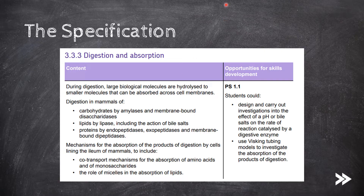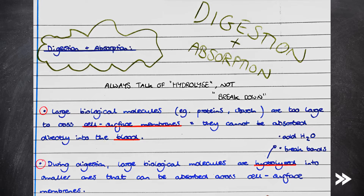Biological molecules such as proteins and starch are too large to cross cell surface membranes, therefore they cannot be absorbed directly into the blood. During digestion, these large biological molecules are hydrolyzed into smaller products that can be absorbed across cell surface membranes. These smaller products then pass into the blood to be transported around the body. In exams, always remember to use the word 'hydrolyzed' not 'breakdown' — on mark schemes, 'hydrolyzed' is the only accepted option and examiners are told to reject answers using 'breakdown'.